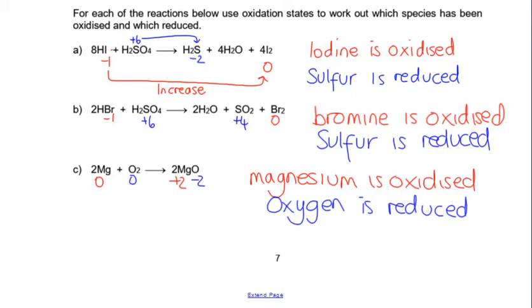What we do know here is in the first one, the I's are going from minus 1 to 0. So they are increasing their oxidation number, but they're doing that by losing one electron.